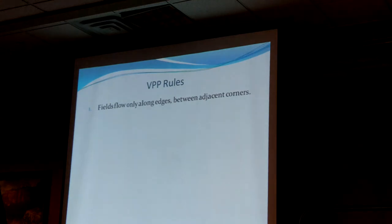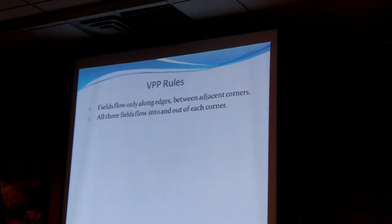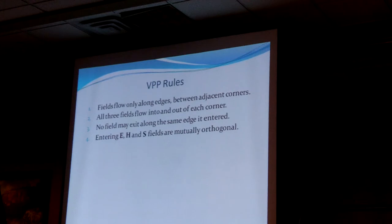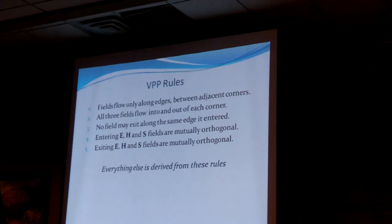Here are the rules. These flows go along the edges from corner to corner until they make a circuit. All three fields — E, H, and S — flow into and out of each corner. No field can exit along the same edge that it entered; it has to go out through a different one, otherwise it's not a circuit. The other rule is that each of the E, H, and S have to be mutually orthogonal coming in and going out.